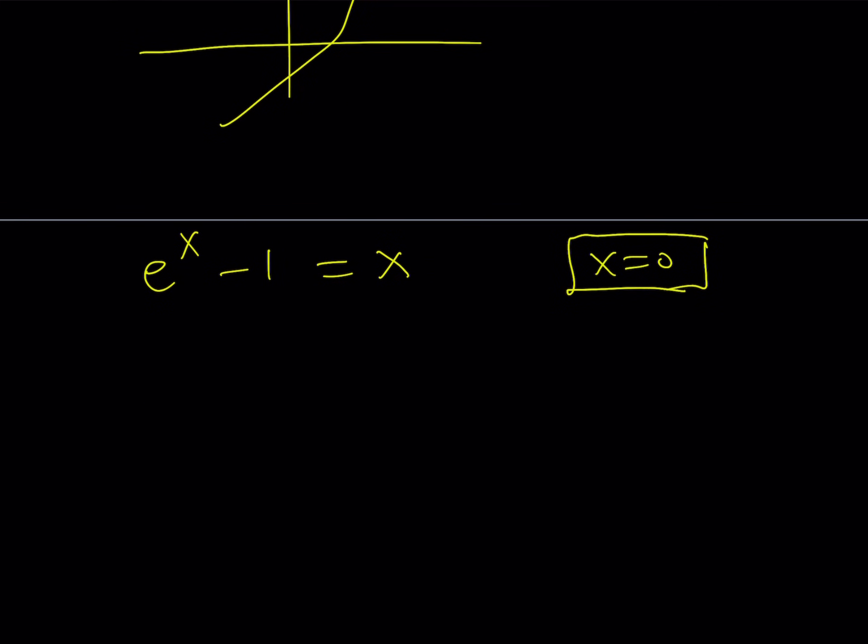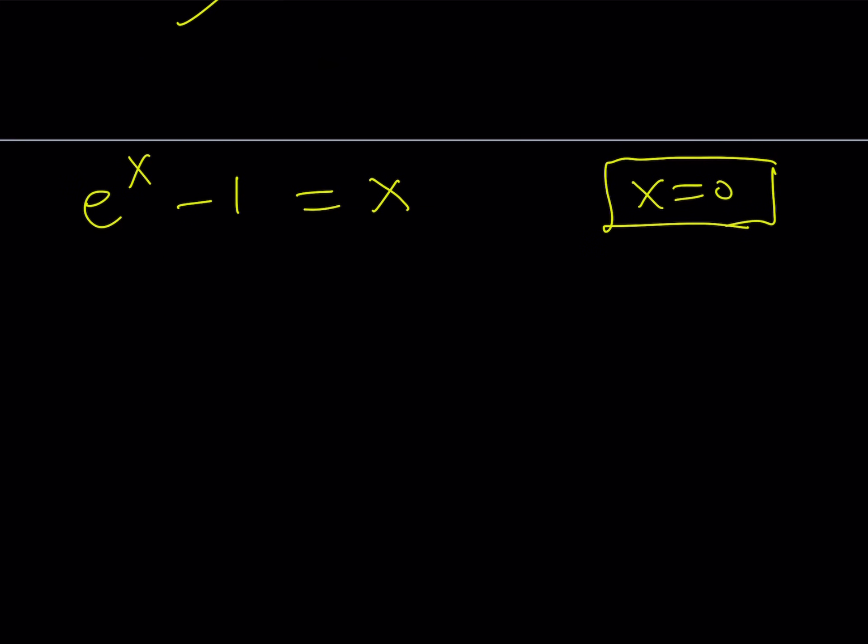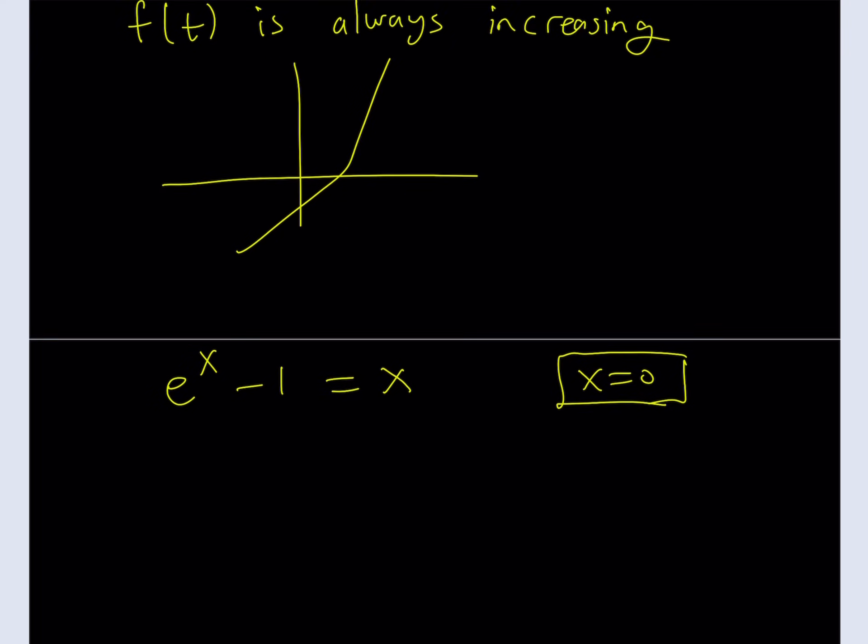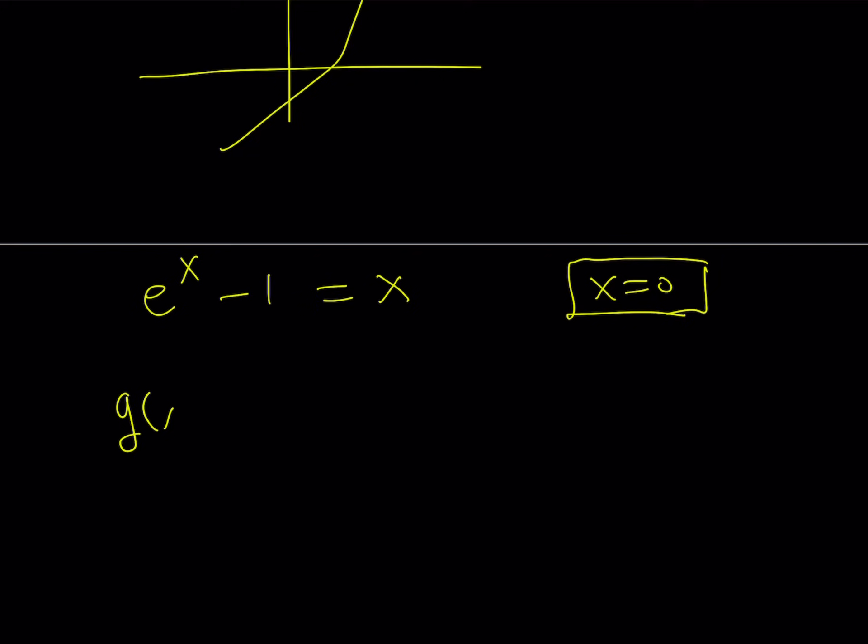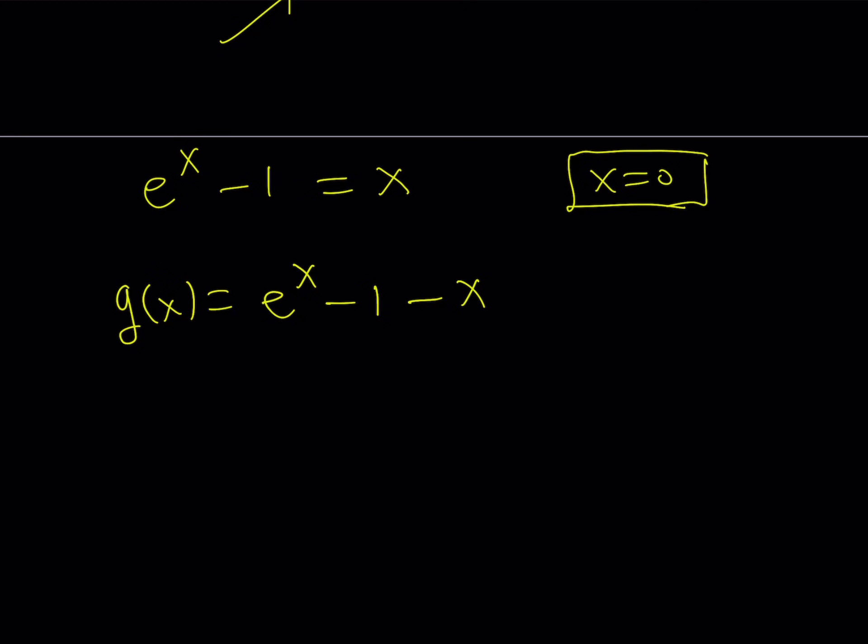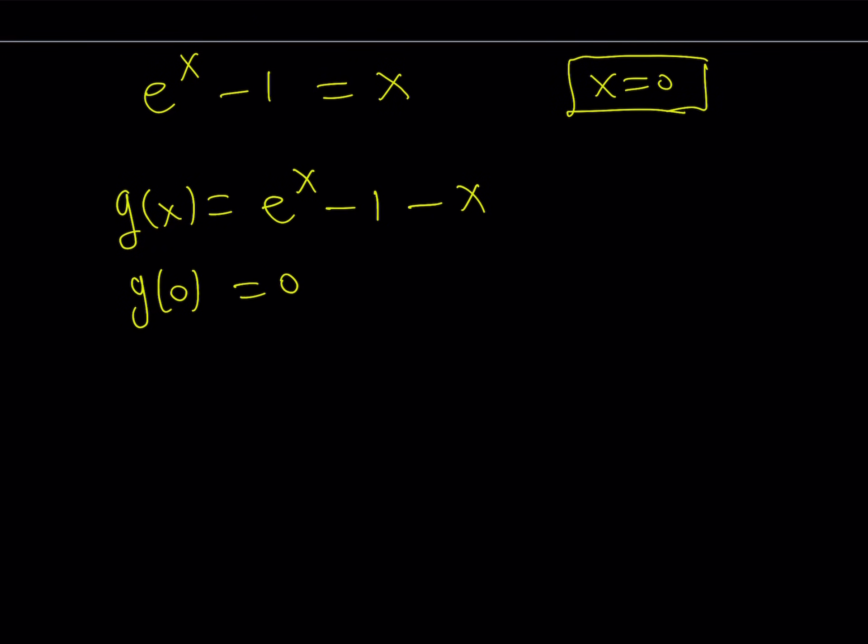Okay. So now, let's take a look at the following function. How about we consider the function g of x equals e to the power x minus 1 minus x. Okay. Now, what type of function is this? Well, we know that g of 0 is equal to 0. So we have one x-intercept. And then let's go ahead and differentiate this function as well. It's going to give us e to the power x minus 1.